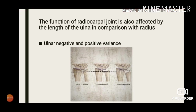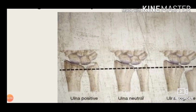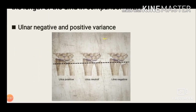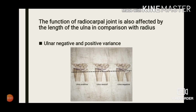The function of the radiocarpal joint is also affected by the length of the ulna in comparison with the radius. There are two conditions: ulnar negative variance and ulnar positive variance. In ulnar positive variance, the distal ulna is long relative to the distal radius. In ulnar negative variance, the ulna is short compared to the radius at the distal end. Ulnar positive variance causes impingement of the triangular fibrocartilage complex between the distal ulna and triquetrum, and is associated with a thinner triangular fibrocartilage complex. Ulnar negative variance may result in abnormal force distribution across the radiocarpal joint, leading to degeneration.